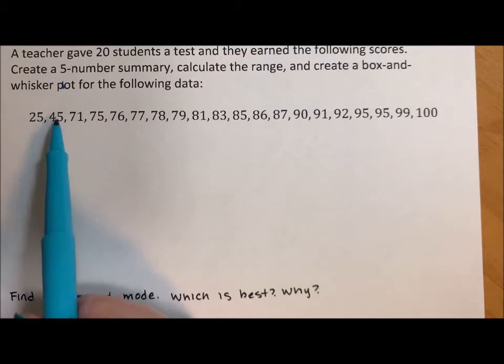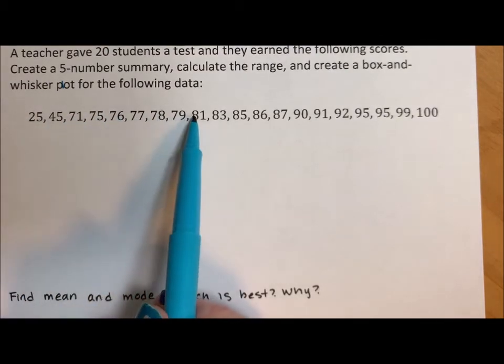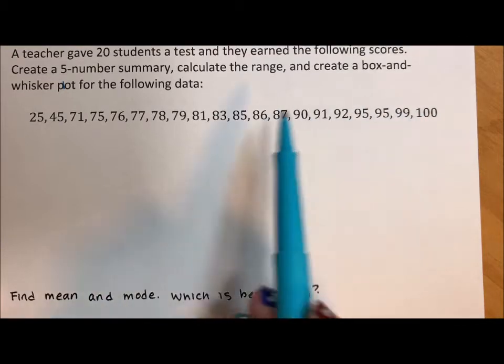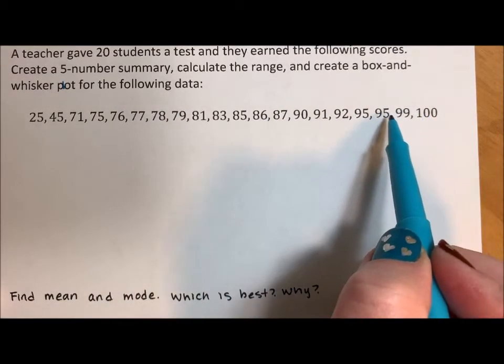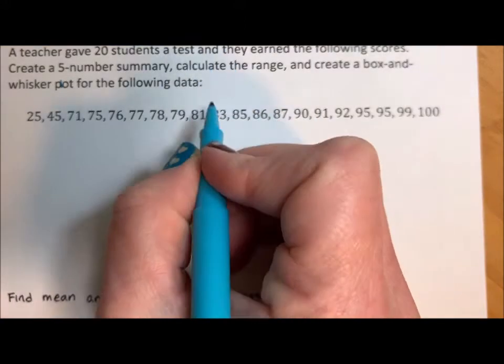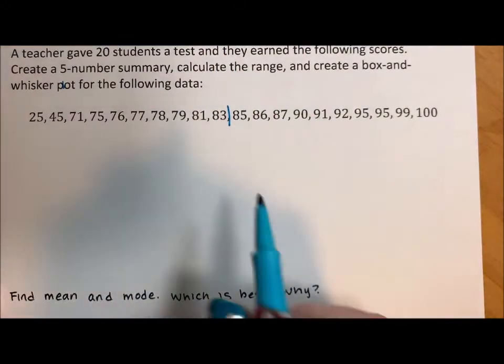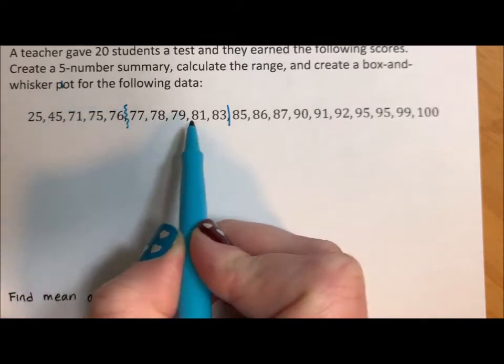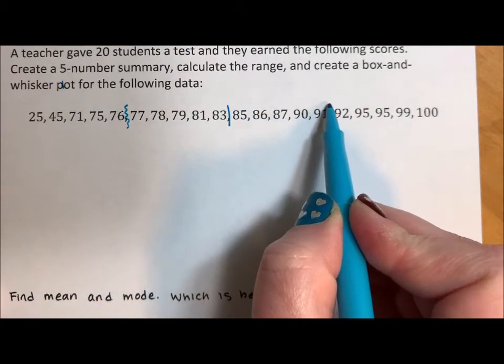Counting the data points: 1, 2, 3, 4, 5, 6, 7, 8, 9, 10. Repeating to verify: 1, 2, 3, 4, 5, 6, 7, 8, 9, 10. I don't even trust me. Counting again: 1, 2, 3, 4, 5, 6, 7, 8, 9, 10. Final count: 1, 2, 3, 4, 5.